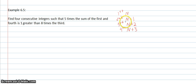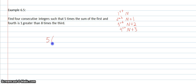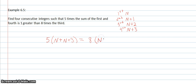That way I won't forget the last three numbers after I solve for n. Let's set this up: five times the sum of the first and fourth — so five parentheses n plus n plus 3. Is equals eight times the third, which is eight times n plus 2, plus 1, since it's one greater.